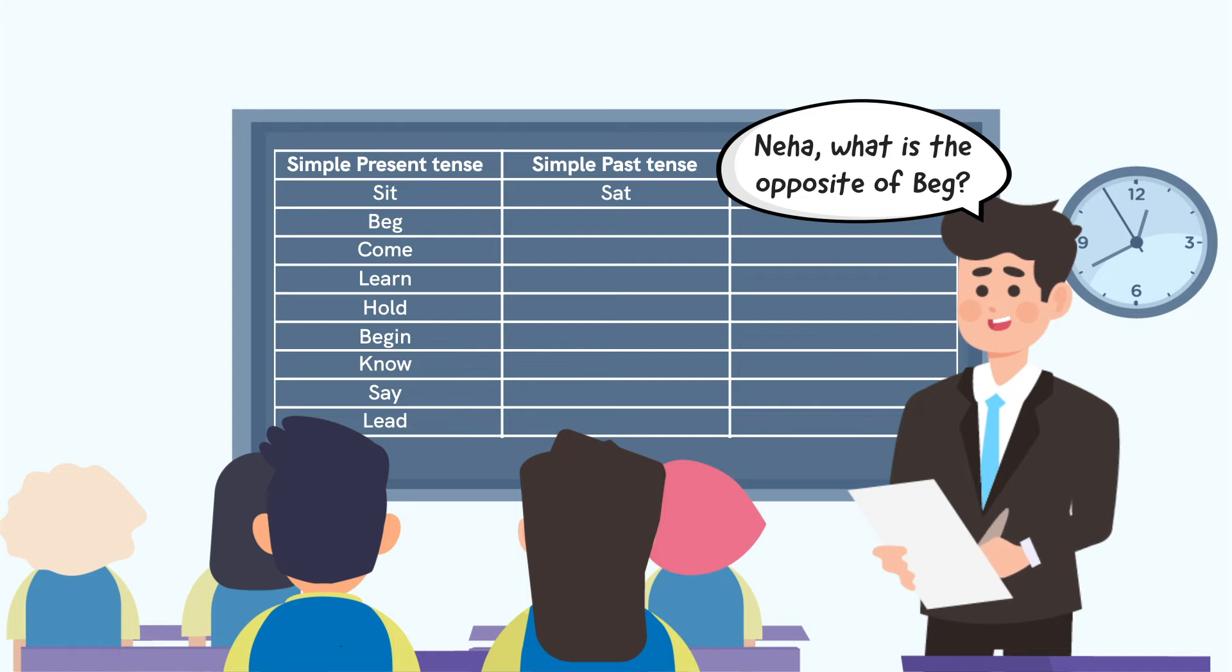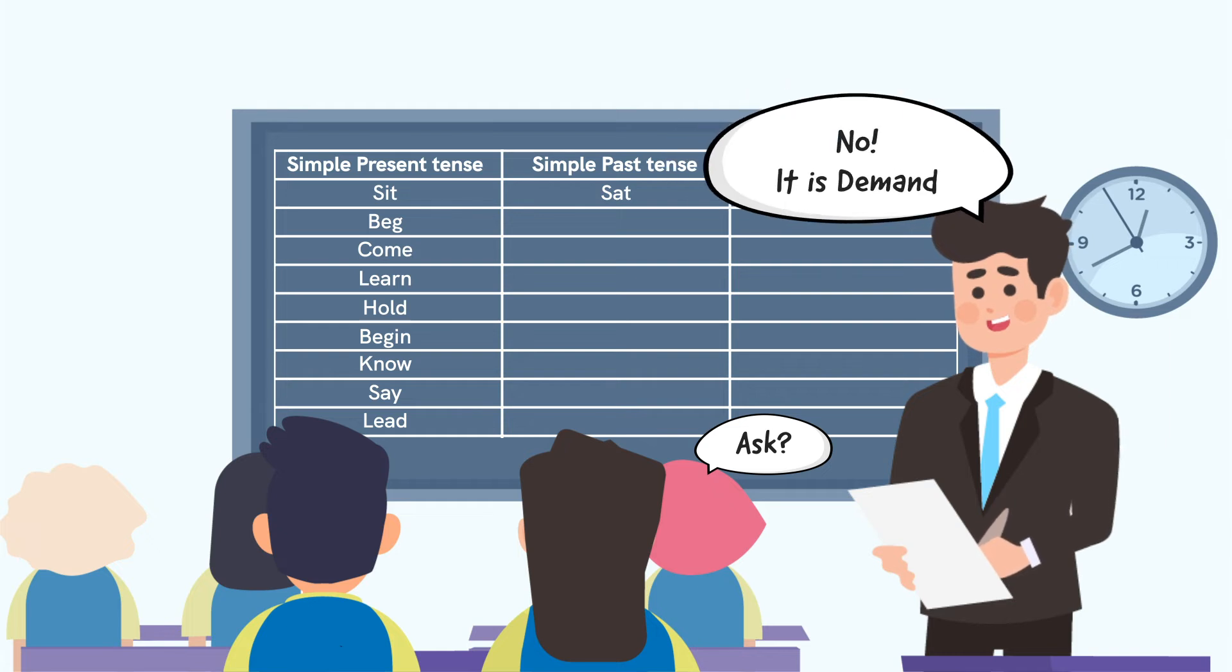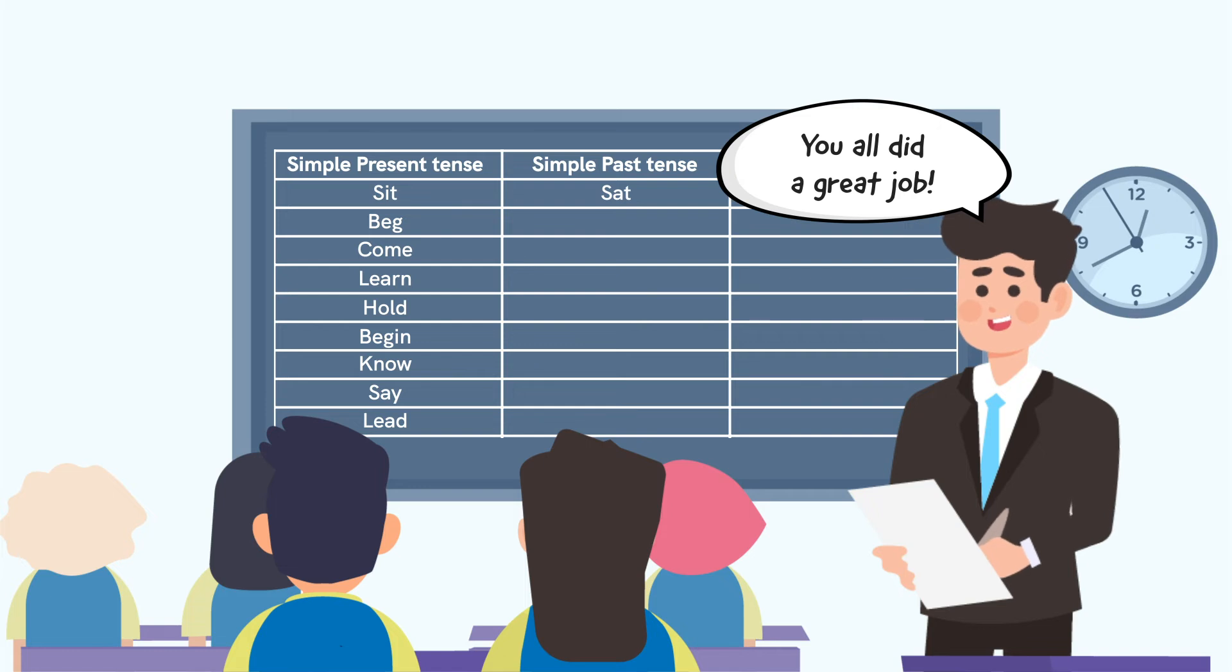Ask the students at random to tell the simple past tense and opposite of any word from the table. Correct them if the answer provided by the student is wrong. Appreciate the students for taking an active part in the activity.